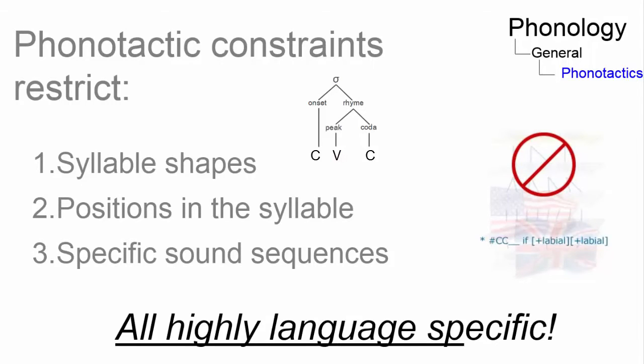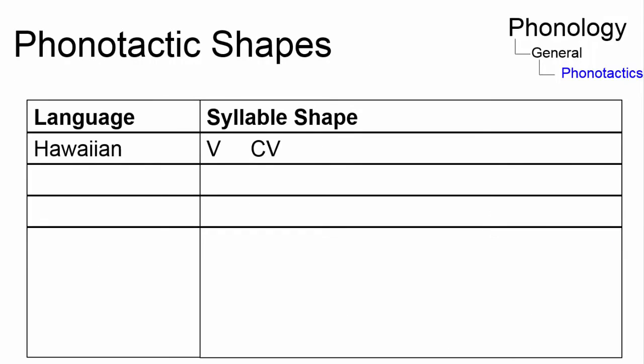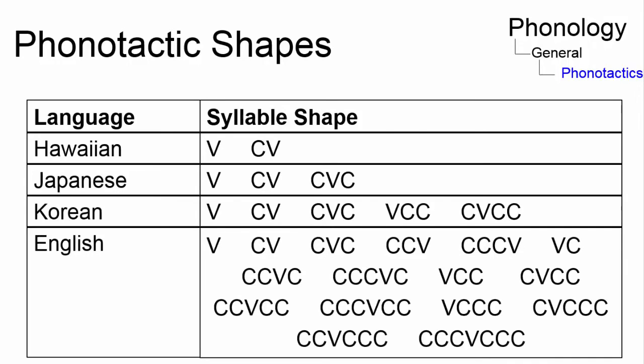These constraints are highly language specific, as shown in the permissible syllable structures in Hawaiian, Japanese, Korean, and English.